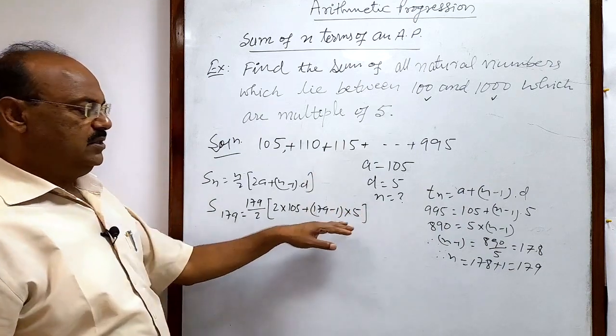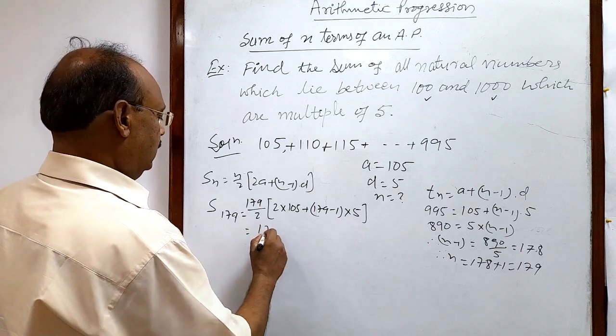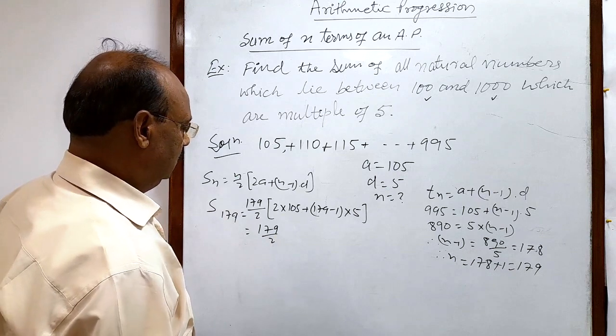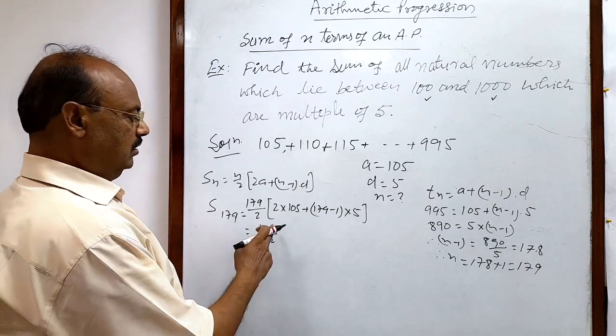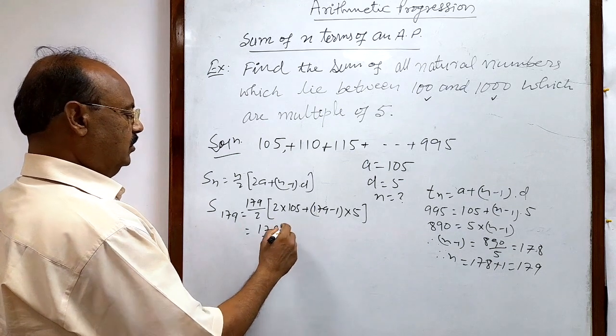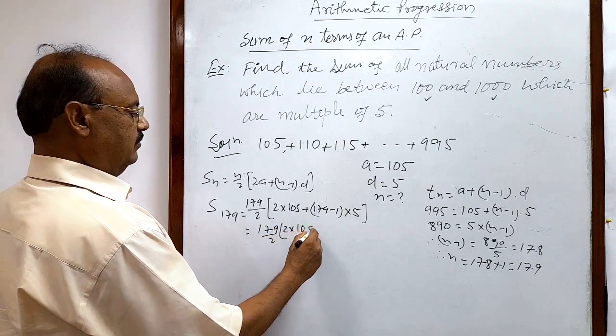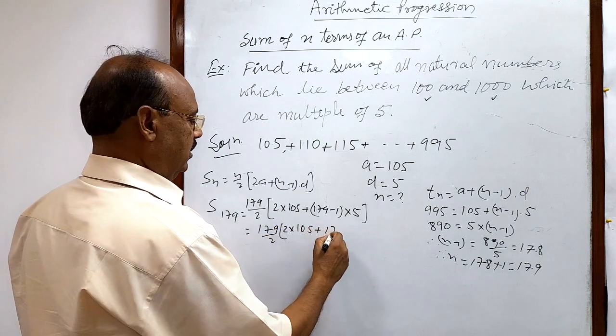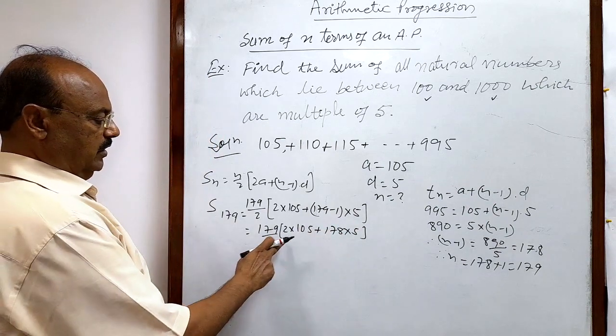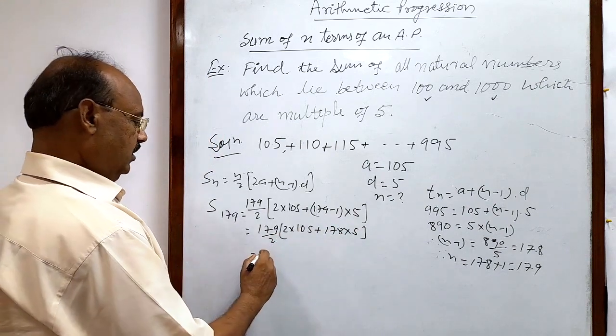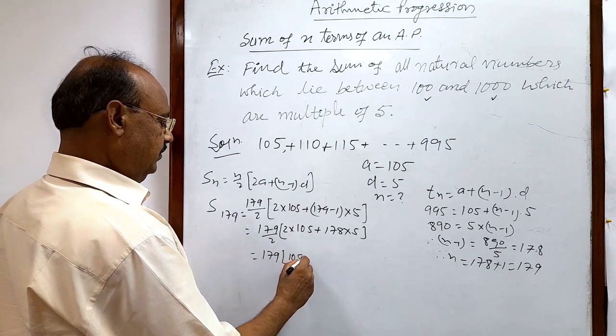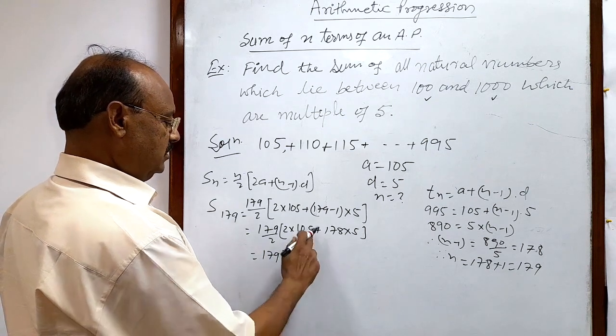Let us simplify it. We will get the answer. So this is equal to 179/2, or we can cancel out this 2. In the next step, this is 2 times 105 and this is 179 times 5. This is equal to, now dividing both terms by 2, we will get here 179 times (105 plus 89 times 5).